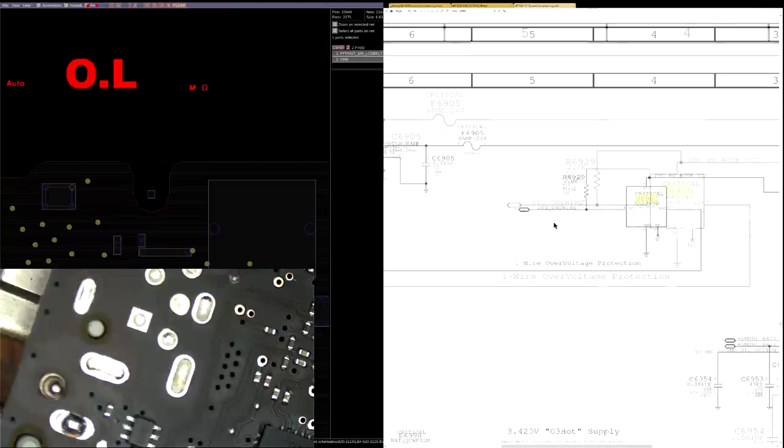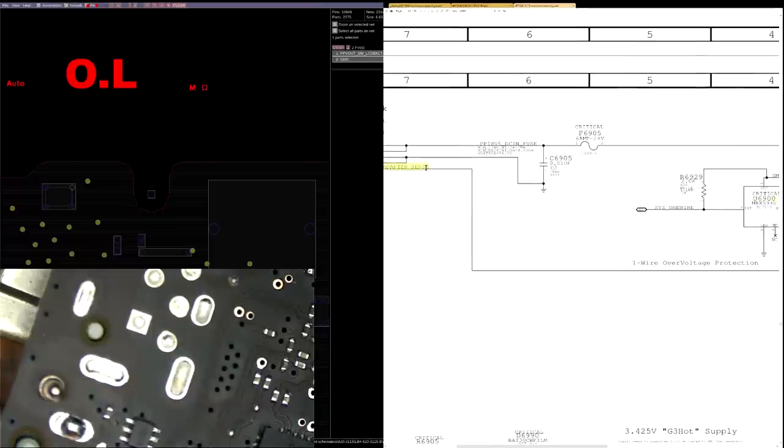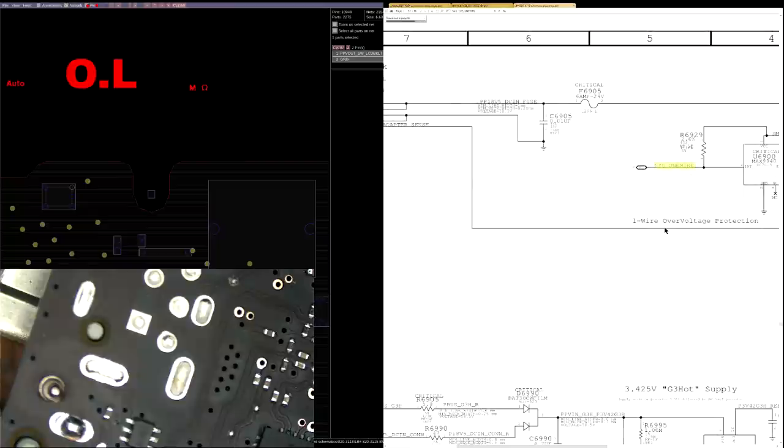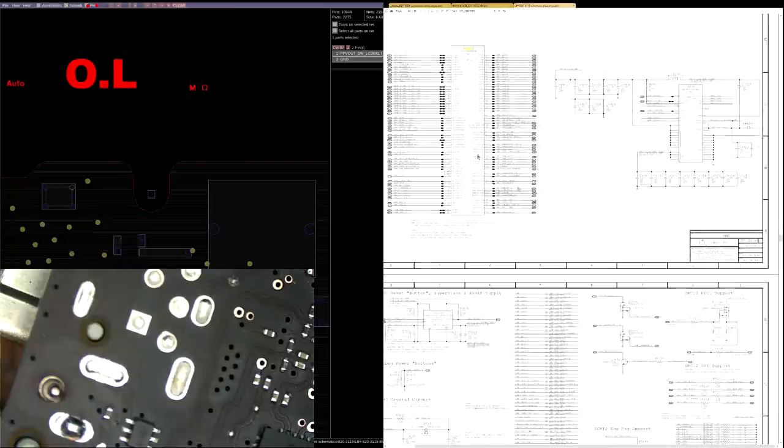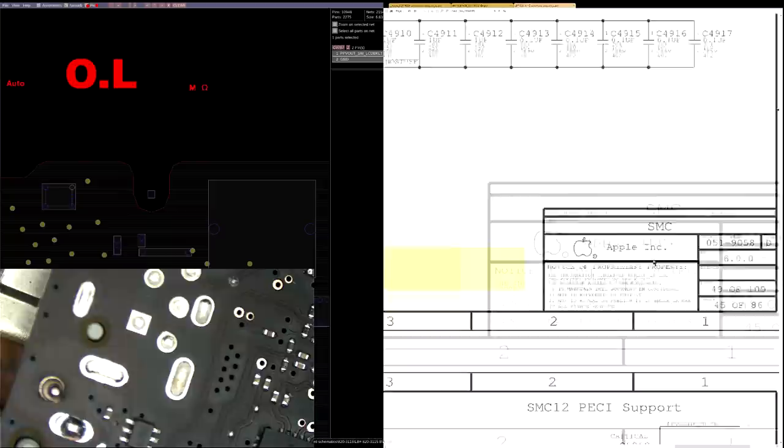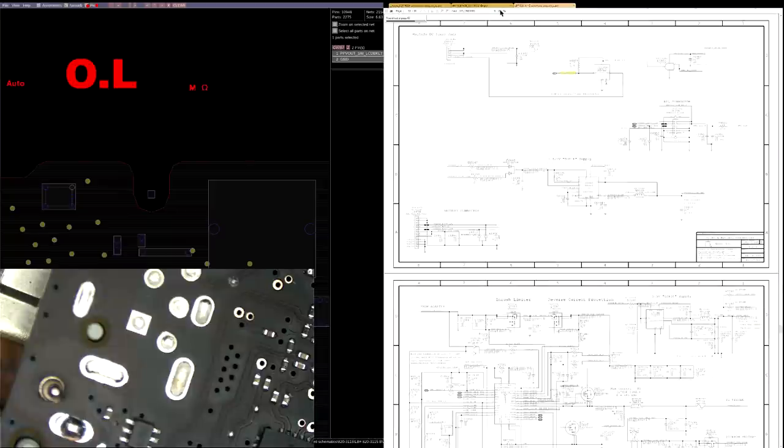U6900 is going to make sure with its sword and its horse that if adapter sense is 16 volts, how dare you talk to my SMC? Whereas if it's only 2.9 or 3 volts, it'll allow the SMC, which you can see here, that's U4900, SMC, it will allow the SMC to talk to the charger on that line.